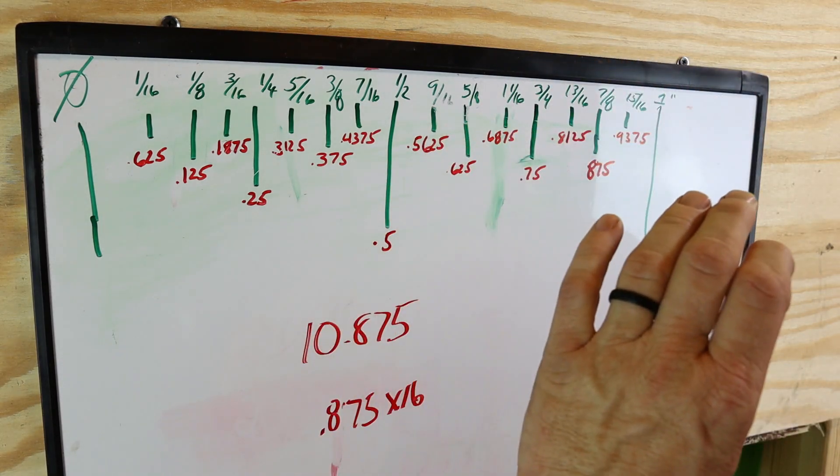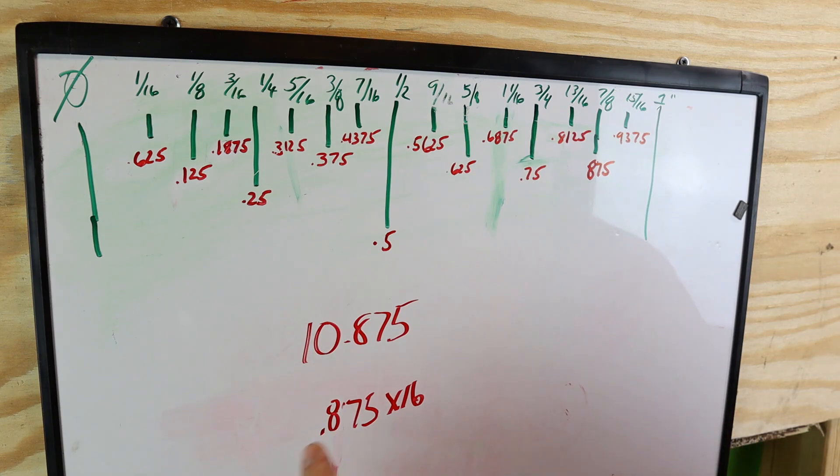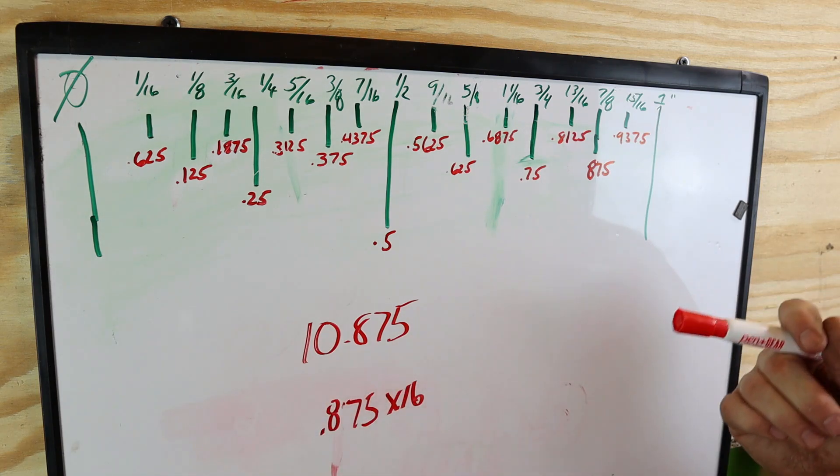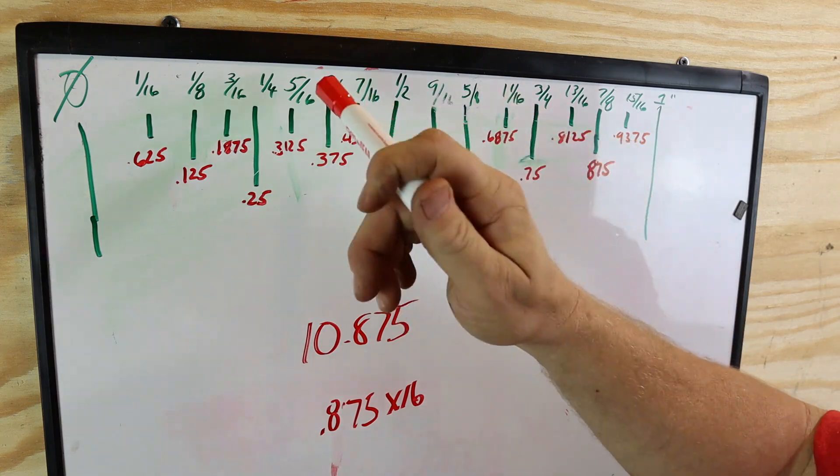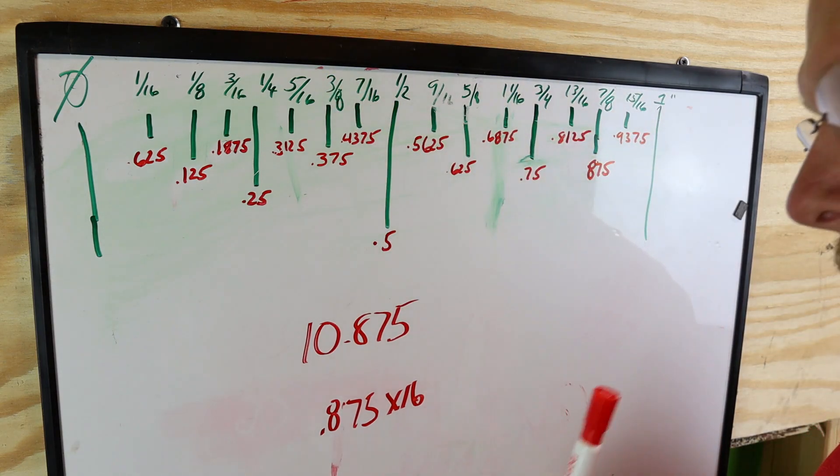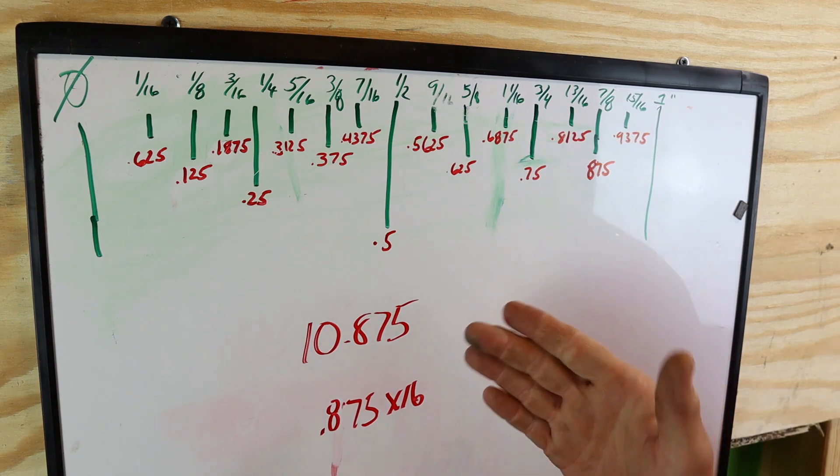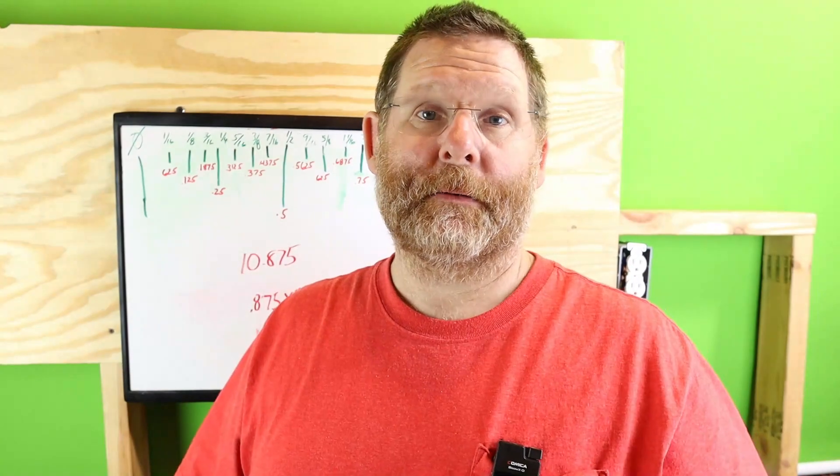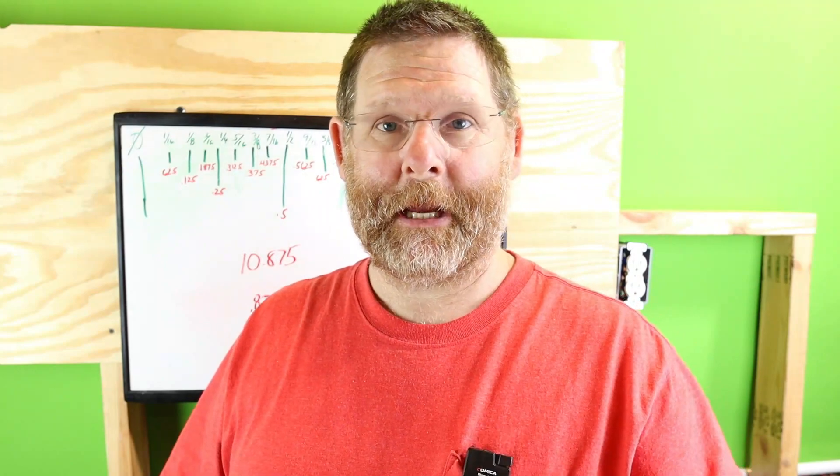So you always take your decimal times 16. All right, that's the easiest route. That will help you guys in your kitchen layouts, in your receptacle layouts, in your carpentry cuts, whatever you're cutting. And you have to turn the fraction into decimal or decimal to fraction, that is literally the easiest way to do it, and now you guys know my little trick.